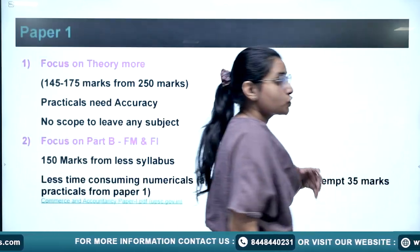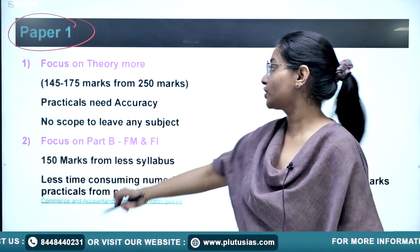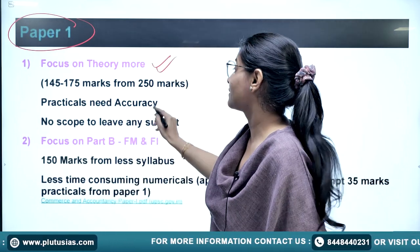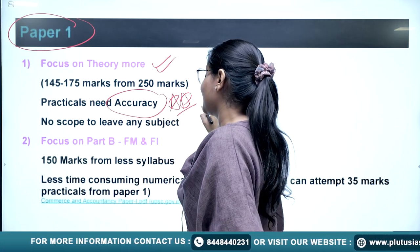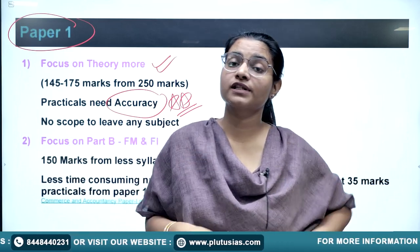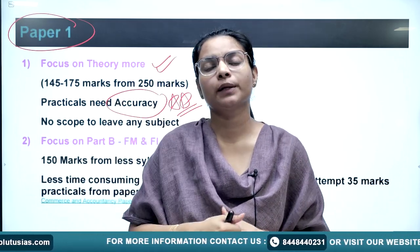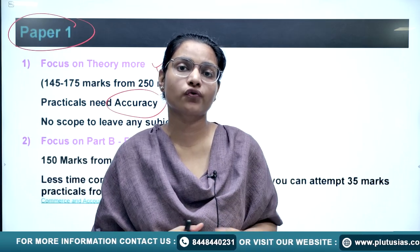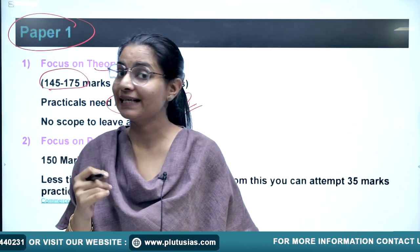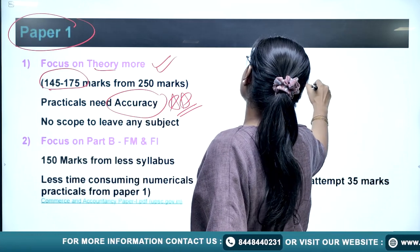Try to choose from the more scoring part. For Paper 1, my first suggestion is to focus on theory more than numericals, because numericals require accuracy. If you find a mistake in the middle of a numerical, your confidence decreases and you won't get marks. In theory, if you fill up one page there is a chance of getting at least 2-3 marks. From theory alone, you can write answers worth 145 to 175 marks, while the maximum from practicals is around 190 marks.